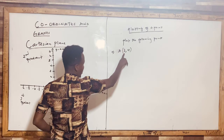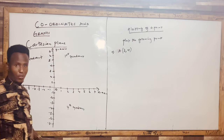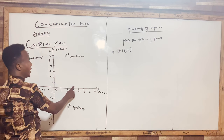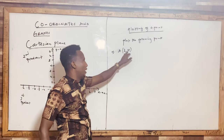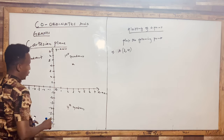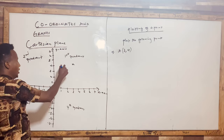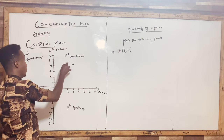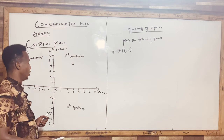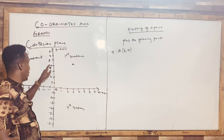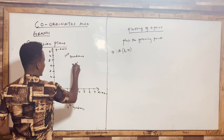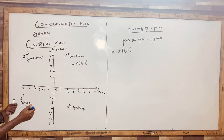The x-axis is horizontal, so I go to x = 3, then move up to where y = 4. Where these two lines intersect is the point (3, 4). That is point A. You can plot using a cross or a dot. This point falls in the first quadrant.